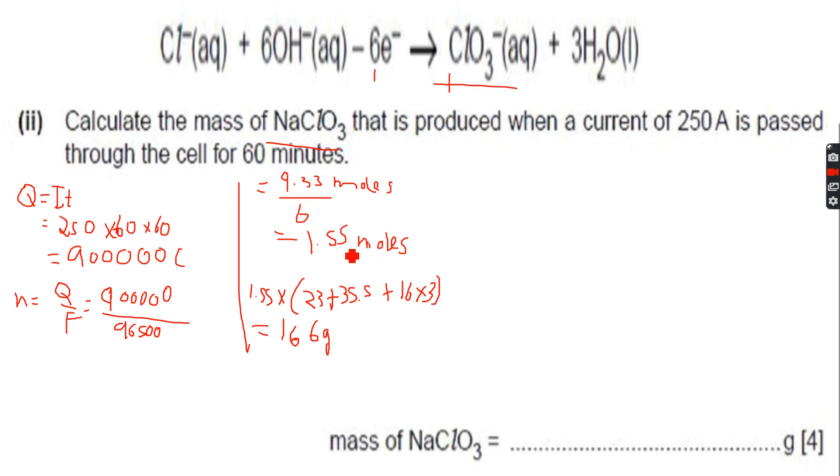We divided 9.33 moles by 6, because 6 moles of electrons give me 1 mole of ClO3 negative ions, so we got 1.55 moles. We multiplied this by the mass of sodium plus the mass of chlorine plus 16 into 3, which was three times the mass of oxygen. To three significant figures, we get 166 grams, so the answer is 166. Let's move forward.